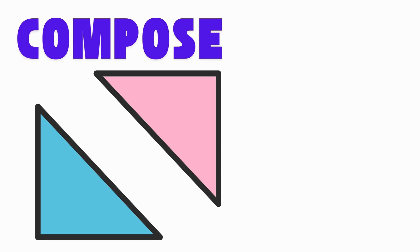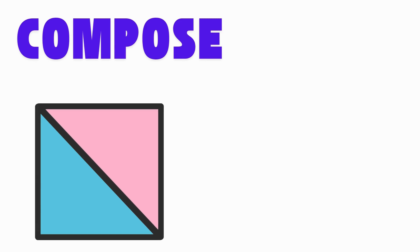To compose means to put shapes together to make something new, like using two triangles to make a square. Say, compose. Pretend to click two puzzle pieces together.